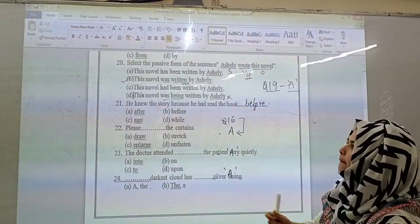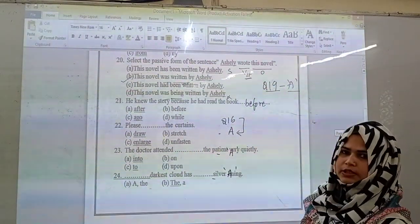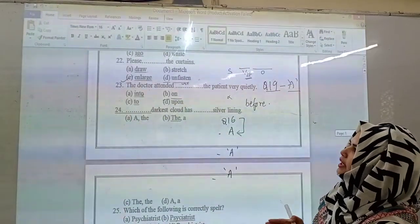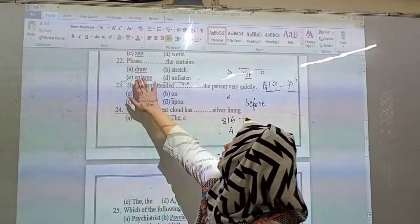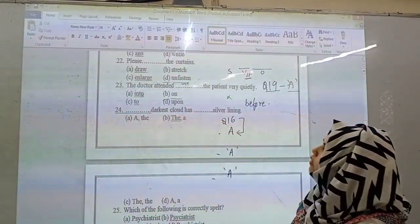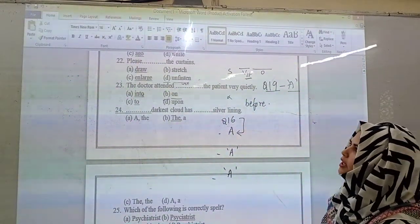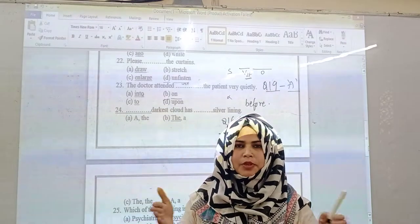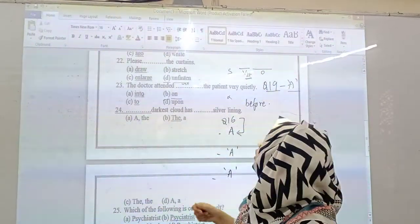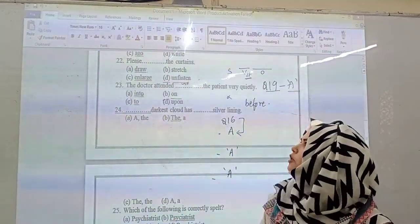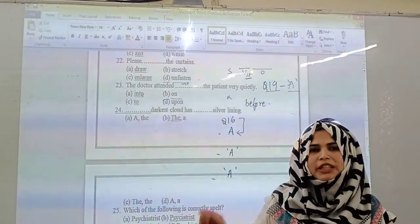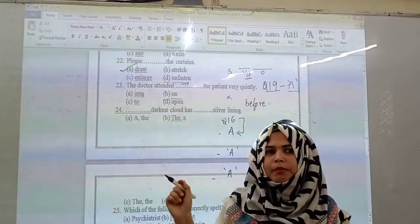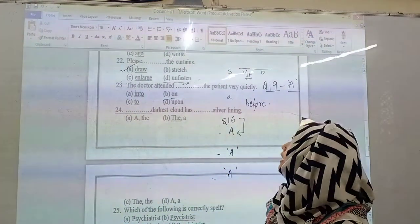Then next: please dash the curtains. Options are draw, stretch, enlarge, or unfasten. Stretch means to stretch. Enlarge means to make bigger. Unfasten means to open. So we will say draw the curtains. Please draw the curtains. Draw is used not for the drawing one but for pulling the curtains.